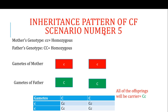In Scenario 5, the mother is diseased, carrying both copies in the mutated form, but the father is homozygous normal. All of the mother's gametes carry the mutated allele, while all of the father's gametes are normal. When crossed, all offspring will be carriers — they receive one mutated copy from the mother and one normal copy from the father — but none will be affected patients.